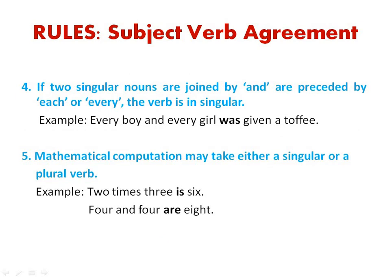Rule number 4 says if two singular nouns are joined by 'and' and are preceded by 'each' or 'every,' the verb is again singular. So if two different singular nouns denoting two different identities are preceded by 'each' or 'every,' we use the singular verb. For example, 'every boy and every girl was given a toffee' — not 'were given,' but 'was given.'